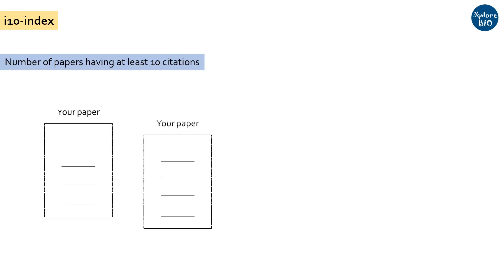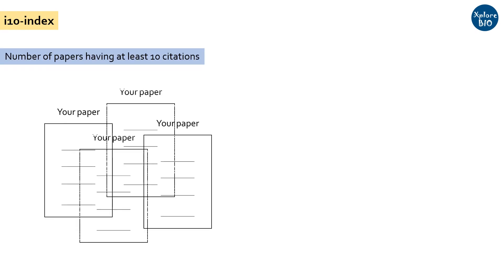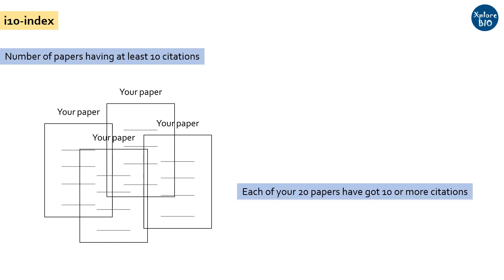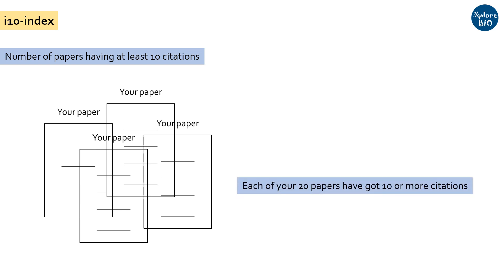Coming on to the major criteria for assessing a researcher's credibility, which is the I10 index. The I10 index tells the number of papers that are cited at least 10 times. So if you have 20 publications which are cited at least 10 times, your I10 index would be 20.